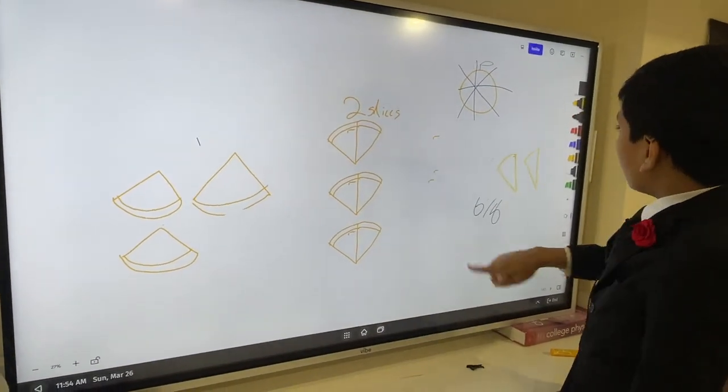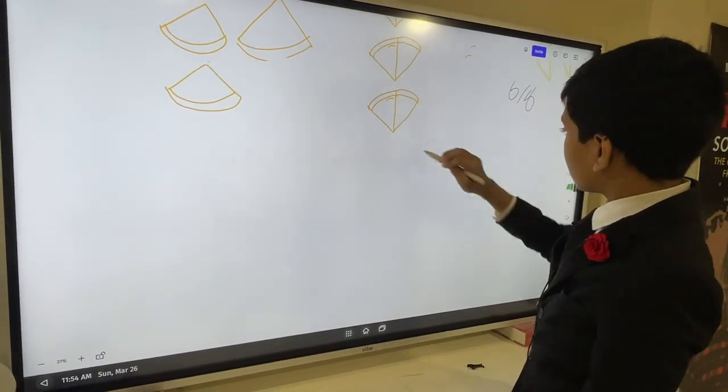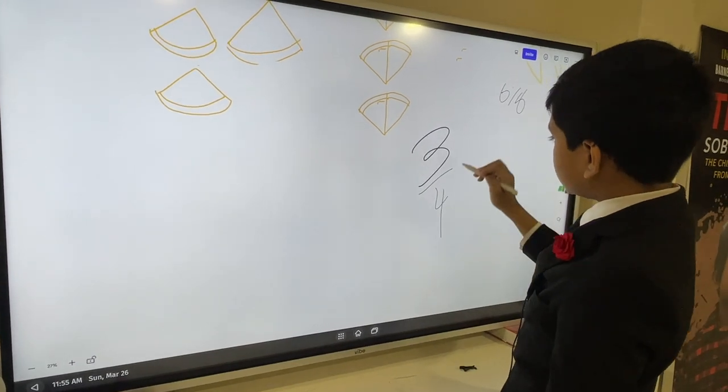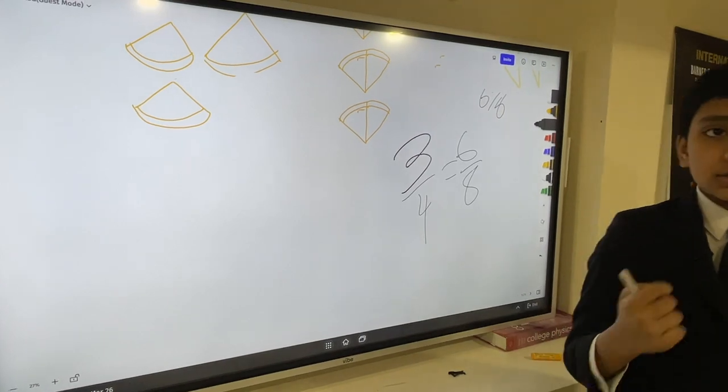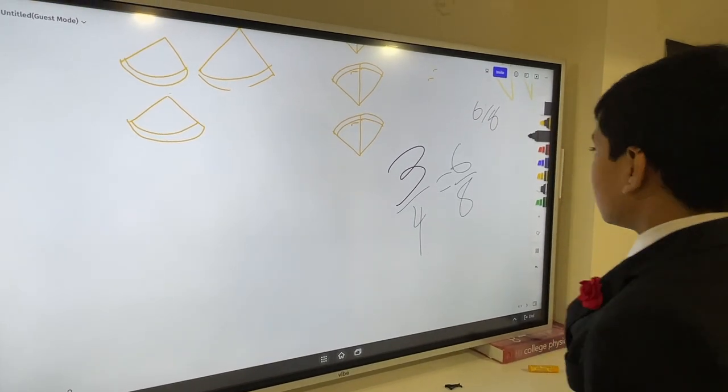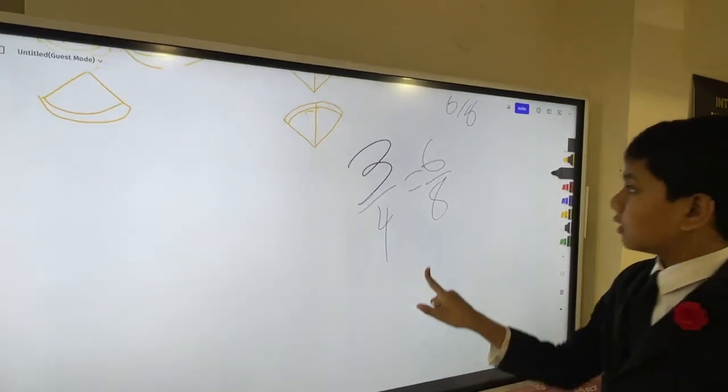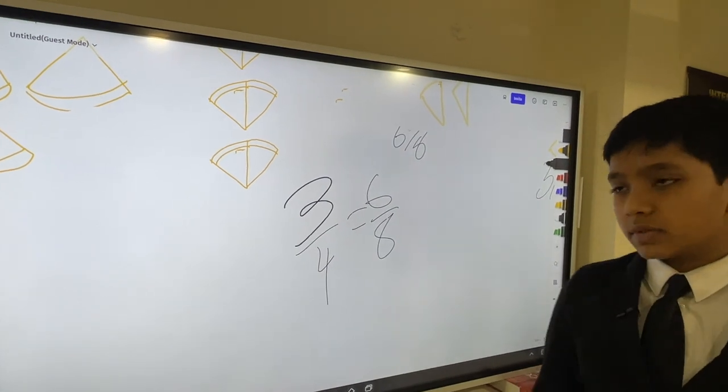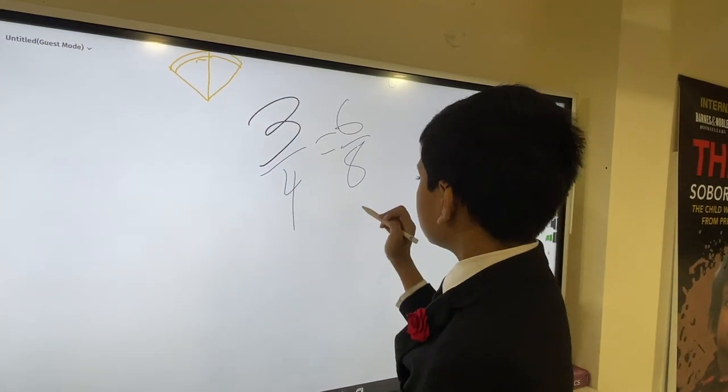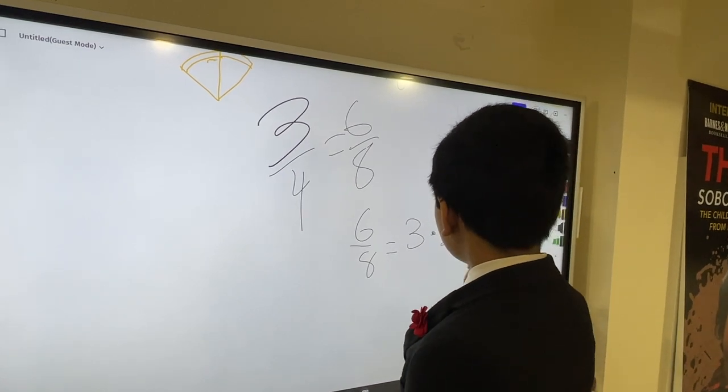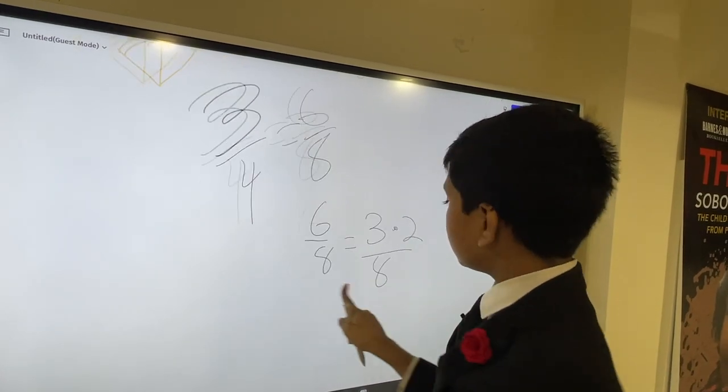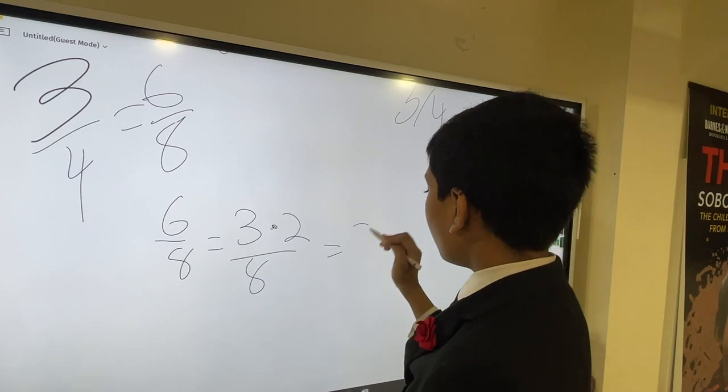That means three over four must be equal to six over eight. So why is this? Well, think about it. We can basically do something really cool. So you know how six is equal to three times two? And then eight is equal to four times two.